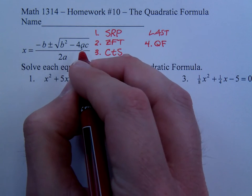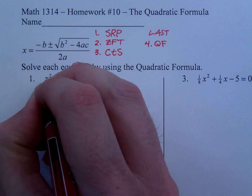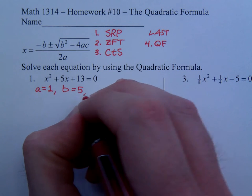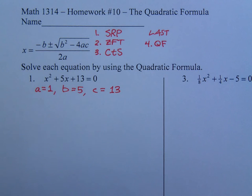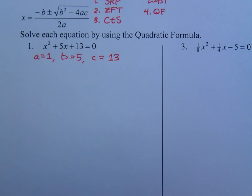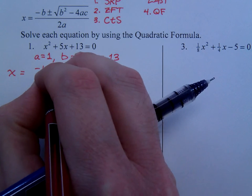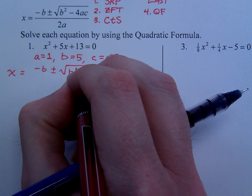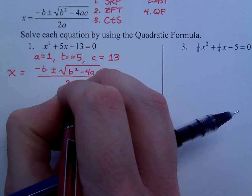Now, to use this formula, you have to identify the a, b, and c. That all comes from right here. a is the coefficient of x squared, which is 1. b is the coefficient of x, in this case 5. And c is just the constant, 13. So, using the quadratic formula, you should write that down every time you use it. Every time you use the formula, write it down, every time.